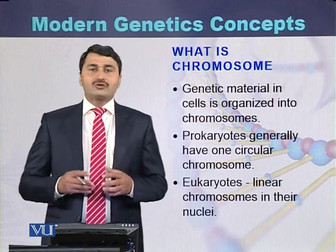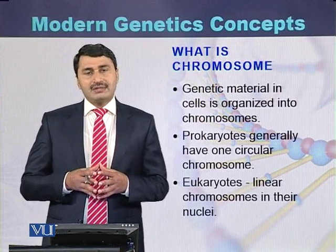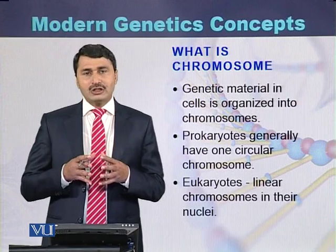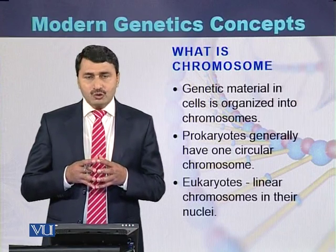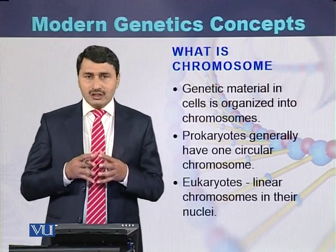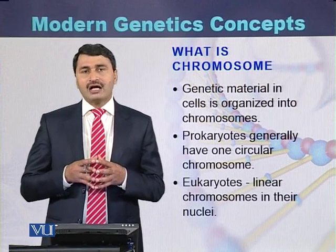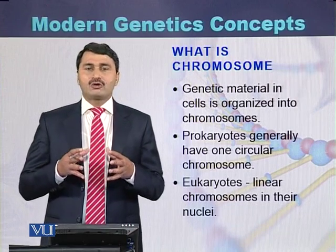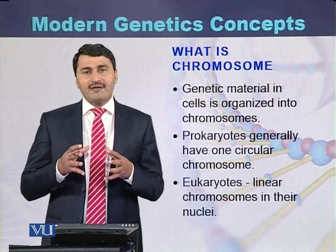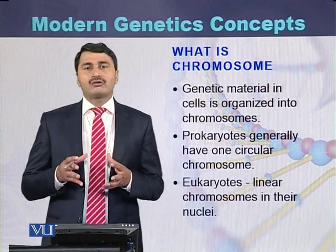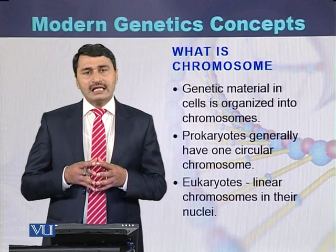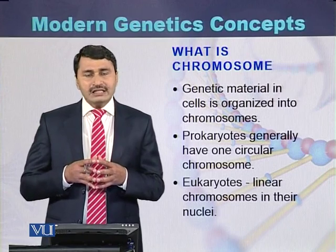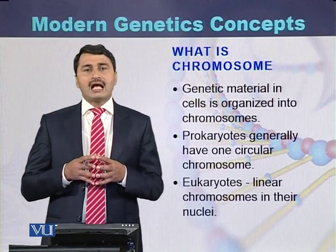What is a chromosome? A chromosome is a genetic material or a specialized structure which is present in the nuclei of eukaryotic cells. Chromosomes are also present in the cytoplasm of prokaryotic cells. In the case of prokaryotic cells, there is generally one single circular chromosome, while in eukaryotic cells there are multiple linear-shaped structures called chromosomes.